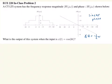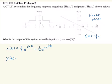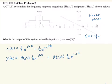We're asked what the output of this system is when the input is cosine 6t. We can rewrite the input as the sum of two eigenfunctions. So x(t) can be rewritten as one-half e^(j6t) plus one-half e^(-j6t). Then by the eigenfunction property, we know that y(t) is simply the frequency response at 6, H(j6), times one-half e^(j6t), plus the frequency response evaluated at minus 6, times the term involving the negative 6 frequency.